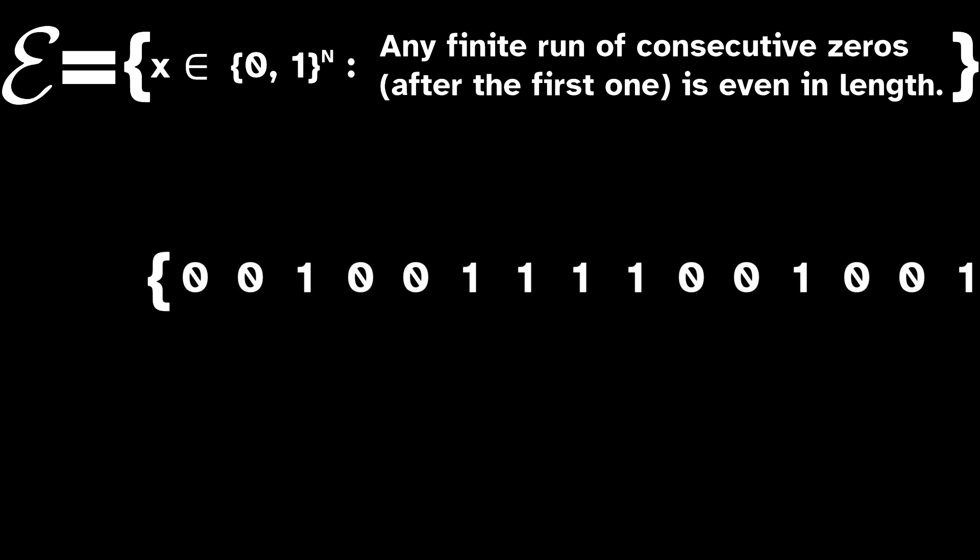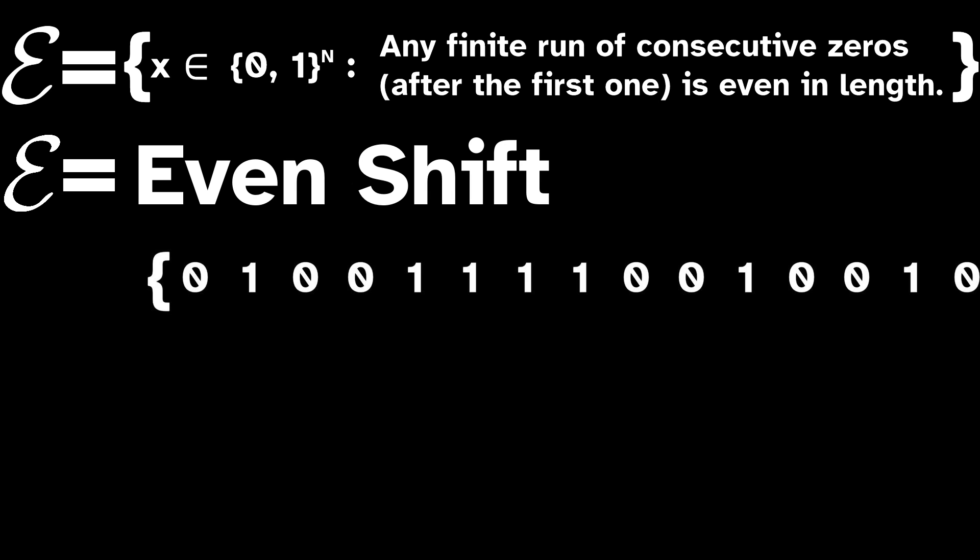But if we allow for the first run of zeros to be anything, then we are safe and the rule is really shift invariant. This subshift also has a special name, the even shift, you can probably see why.